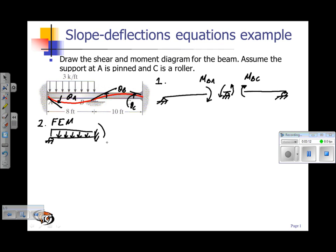And so my fixed-end moment for this case is going to be equal to WL squared over 8, where W is the distributed load and L is the span of my beam. So for this case, the fixed-end moment from B to A is going to be equal to 3 kips per foot times 8 feet squared divided by 8, which gives us 24 kip feet.